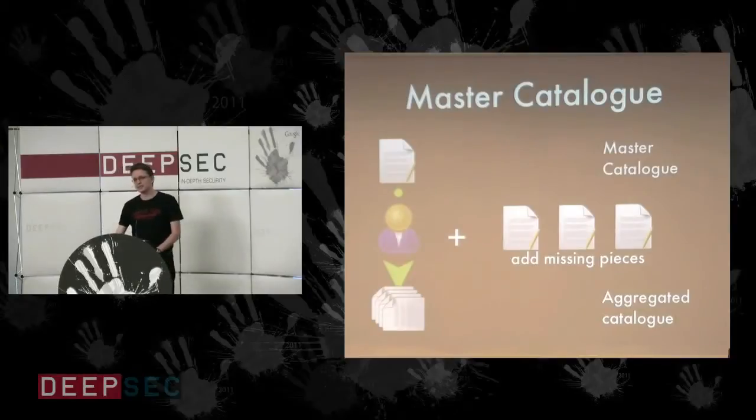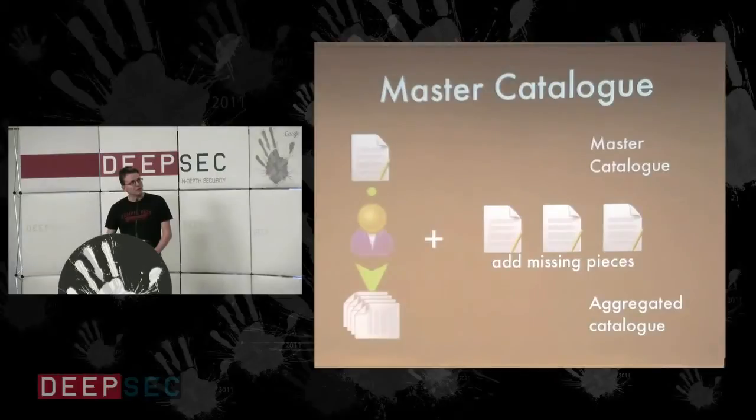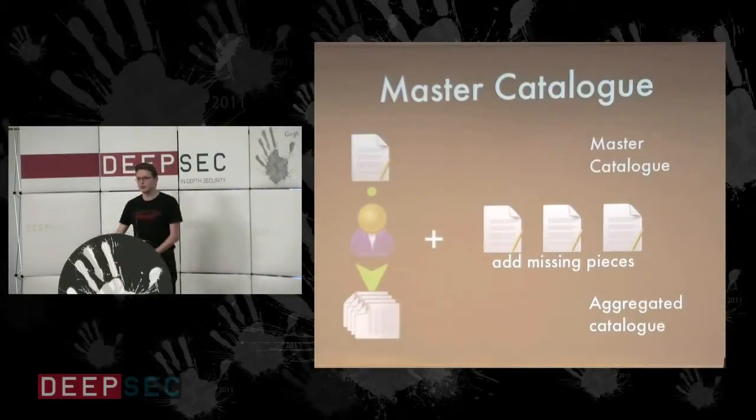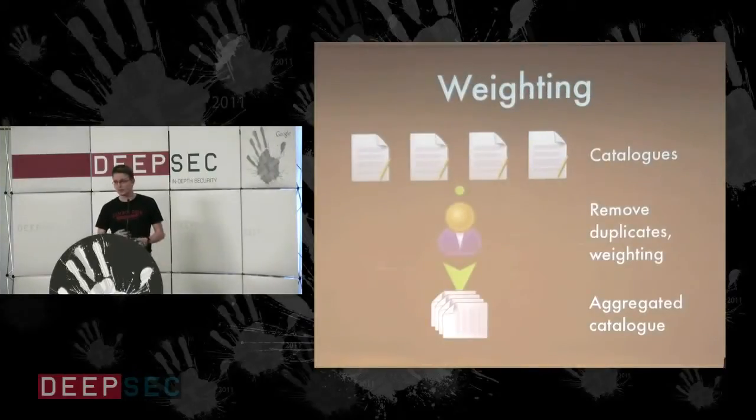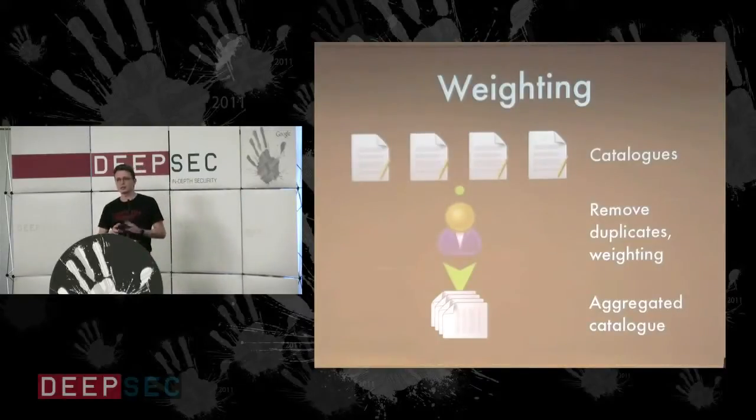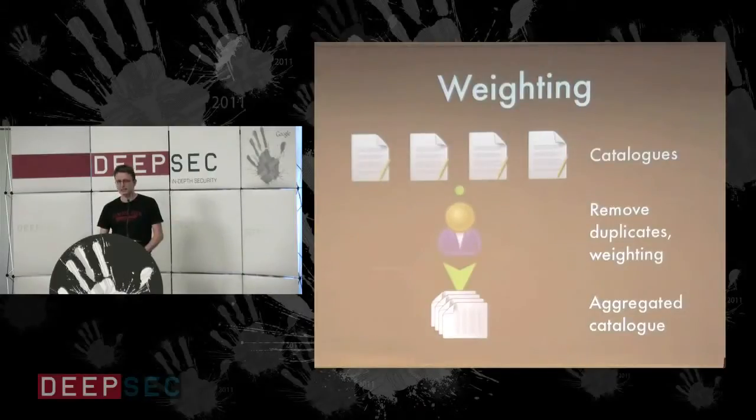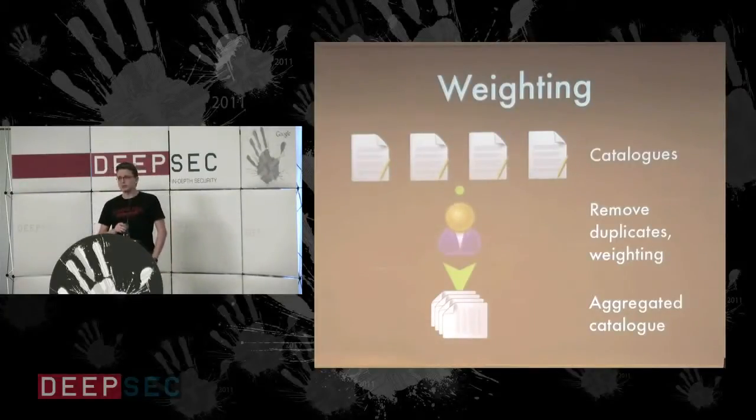Because the catalogues usually have some intersections. So the second strategy was you take a master catalog and then you just add the stuff which is not already in there. Unfortunately this doesn't work that great as well because there's some weighting in these catalogues. Some catalogues have controls which are stronger than other controls from other catalogues. If you look into PCI DSS, it states what you need to log as example. And the ISO doesn't state what exactly you have to log. So you have to look after these weightings.